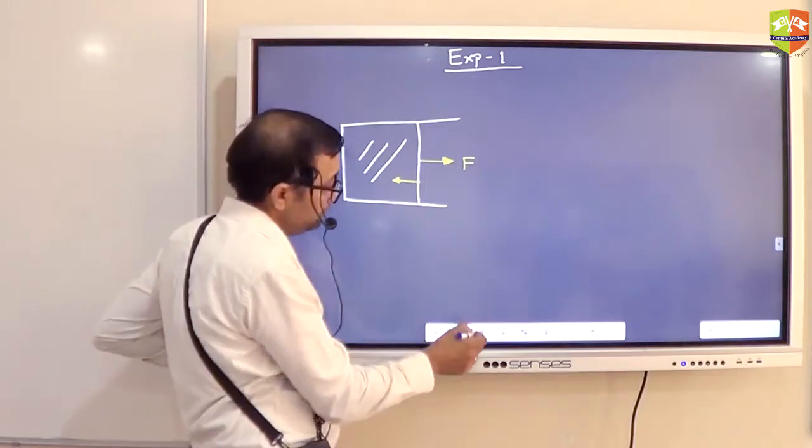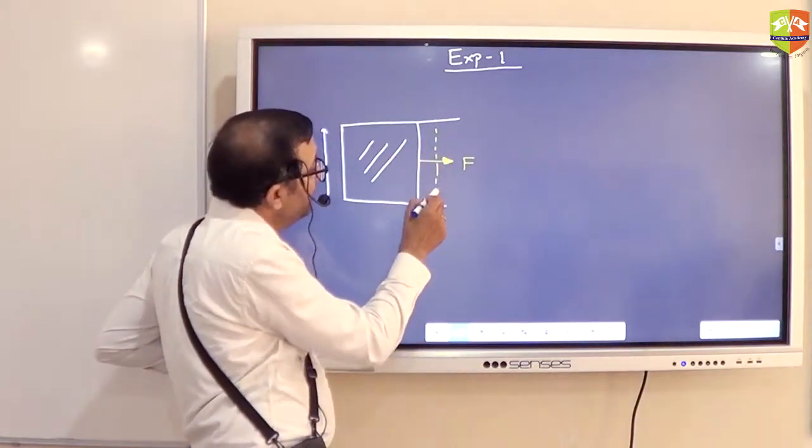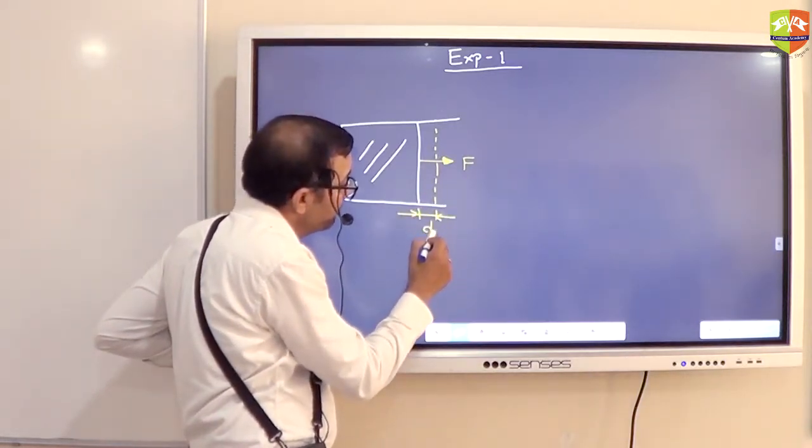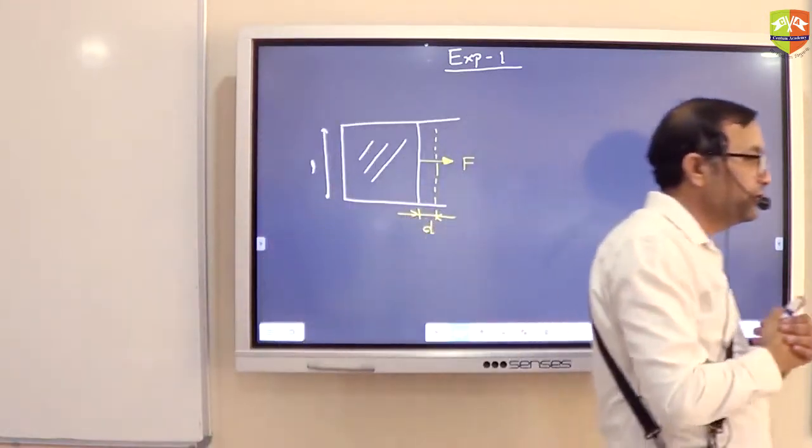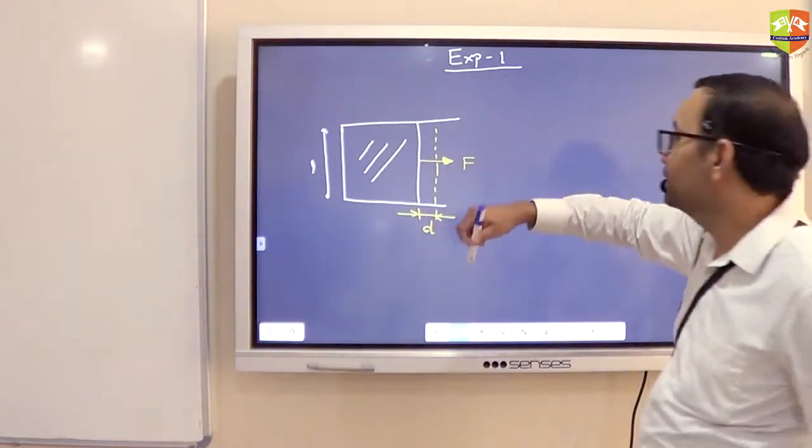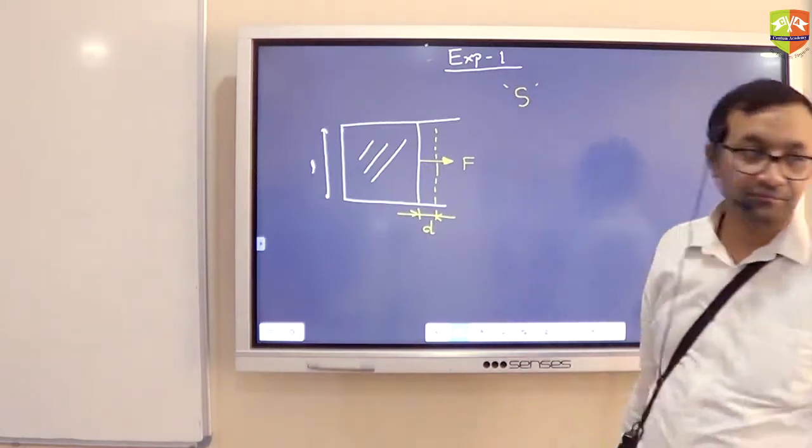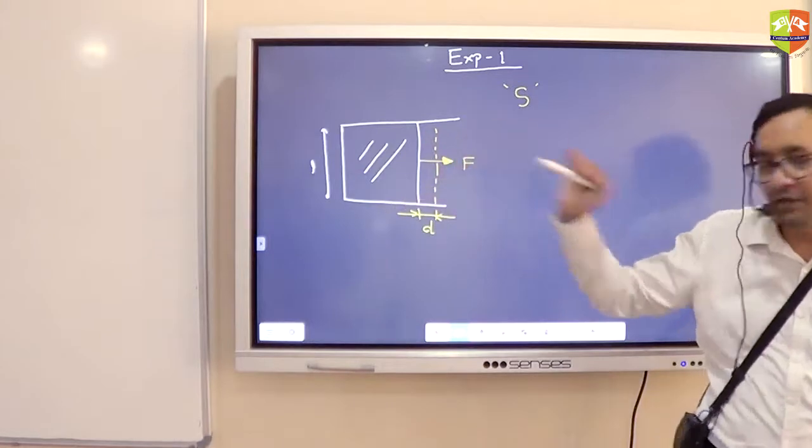So this force moves by a distance of D. Now I want you to apply work energy theorem between the initial and final condition. Let us say surface tension is S. What is the theorem between when piston is here and then when it is here?